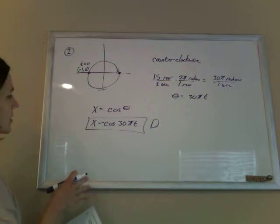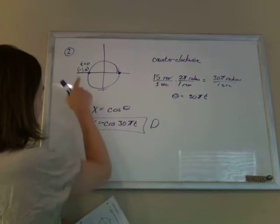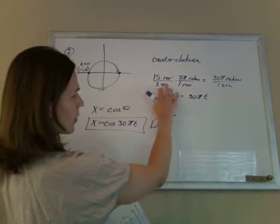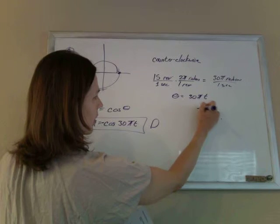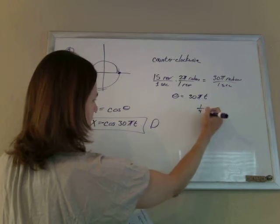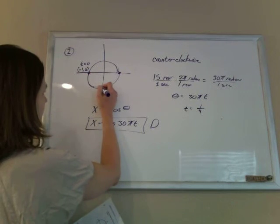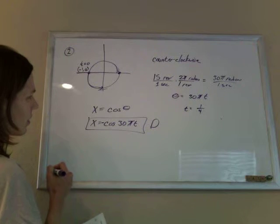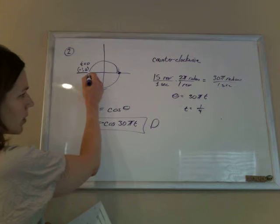And we can try some things to see if it works. What would I like to plug in? Something nice. So time 0, we're there. And every second it's going 30π radians. And so if I went, let's say, like a fourth of a second, I would expect to be a fourth of the way around. I would expect to be there, 30π radians in one second.